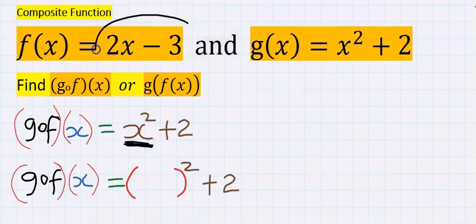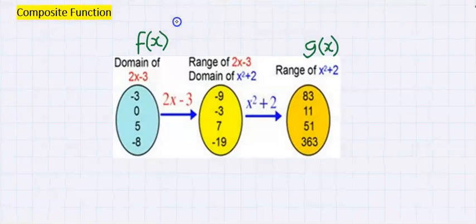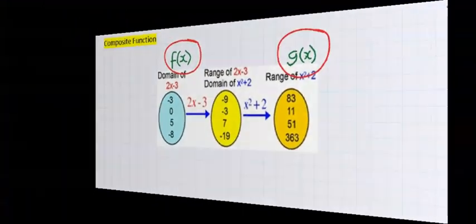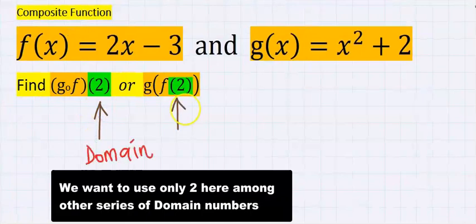What we did was taking the value of f of x to create a series of numbers. If we decide to take 2, for instance, as a domain in this composition function, what will be the range?